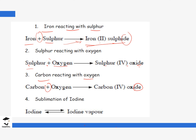An equation doesn't necessarily have to have more than one reactant. For example, iodine sublimes — iodine when heated can go forward to form vapor, which can cool down and go back to iodine solid. When you have two arrows, it means the reaction is reversible. Equations come in different ways and different forms with different reactants and different products, depending on what you have been given and what you are going to form.